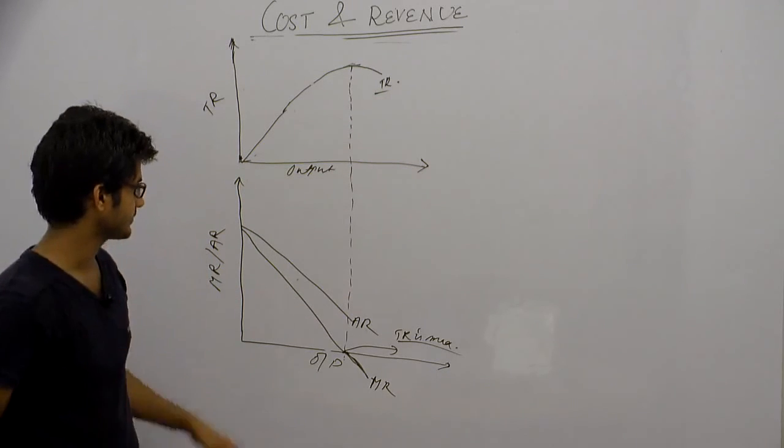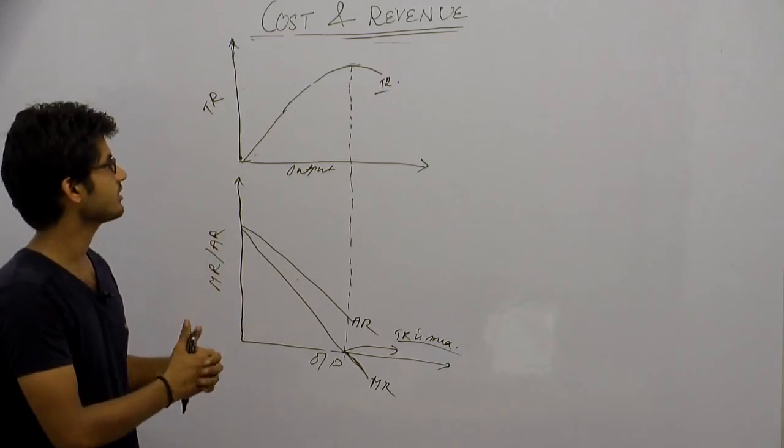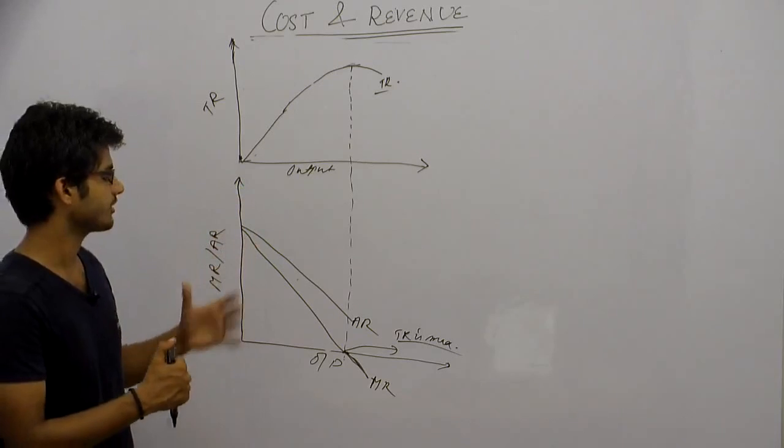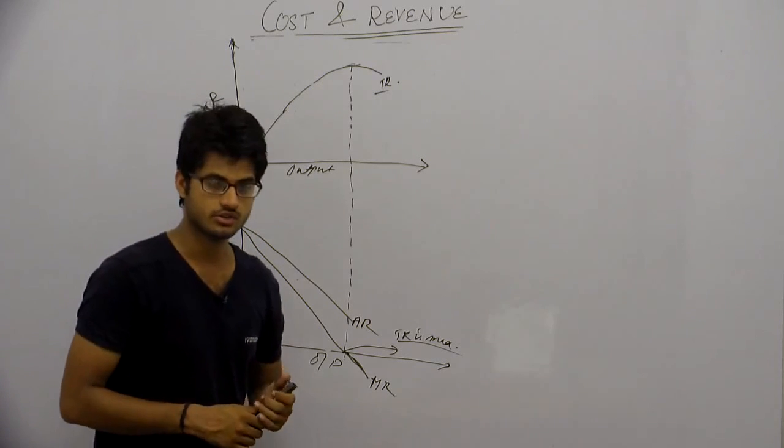So this is the relationship between total revenue, marginal revenue, and average revenue.